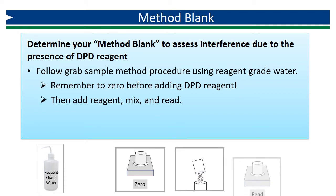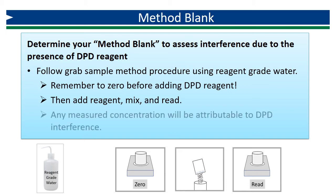Then add reagent, mix according to the published procedure, and read the result. Because we know there is no chlorine present in the reagent water, any measured concentration that is detected will be attributable to the presence of DPD. This value will be subtracted from our measured concentrations in order to produce a corrected concentration that is a more accurate assessment of the concentration of chlorine.